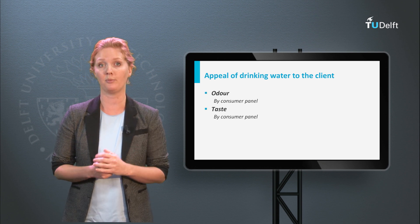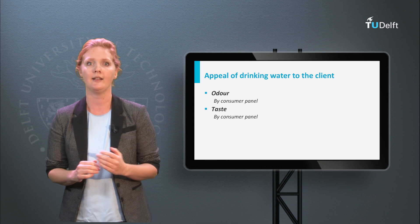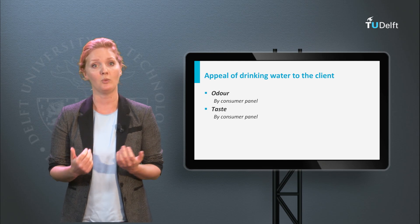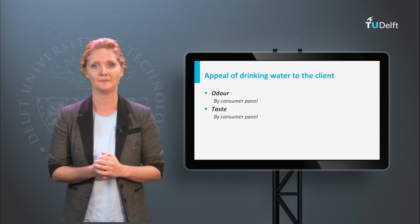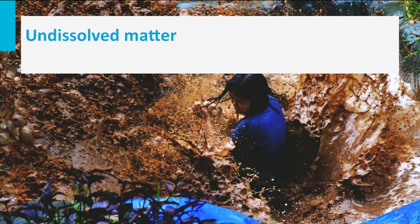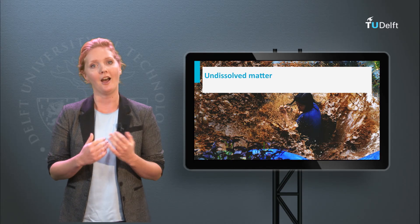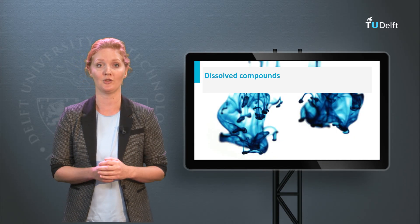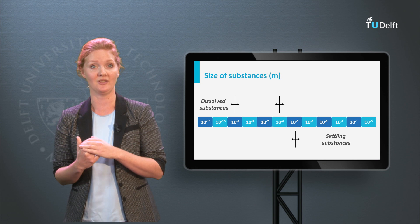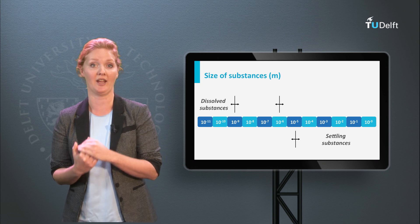Odour and taste are subjective parameters which cannot be detected by any device. The acceptable taste and odour of water are determined by using consumer panels, which determine whether they detect an unpleasant flavour or smell. Colour and turbidity can be measured in the water, as well as the constituents influencing aesthetics such as iron and sulphate. Undissolved matter or suspended solids can also cause discoloration or turbidity. Undissolved matter consists of large or small particles which have not been dissolved in the water — a different group from the earlier mentioned dissolved chemical substances.